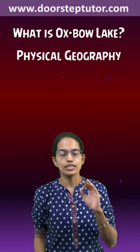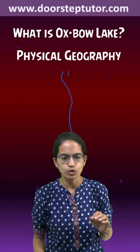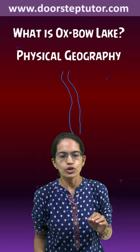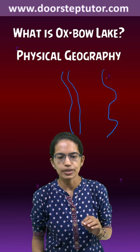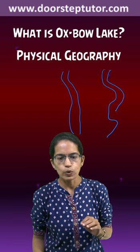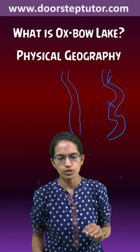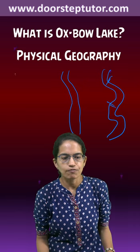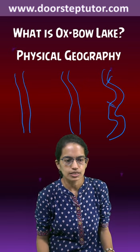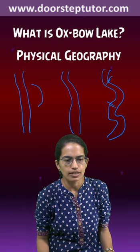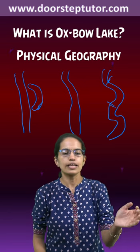What is Oxbow Lake? How is it formed? Interesting — when a river flows through, what happens is the river starts to meander. Now when the river starts to meander, there is deposition on both the sides, and finally the river changes its path, and the deposition leads to the...